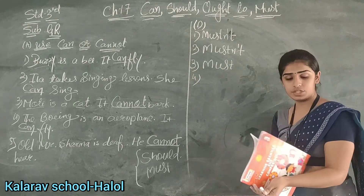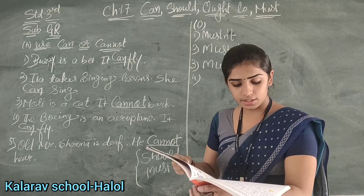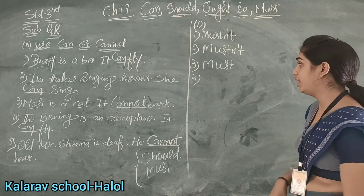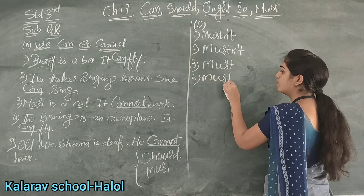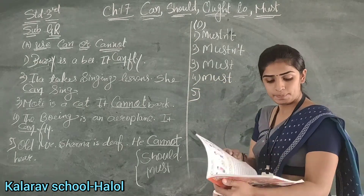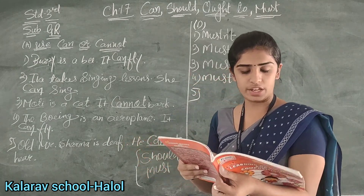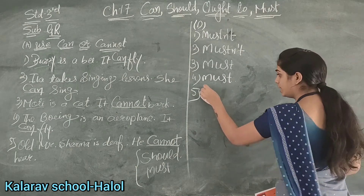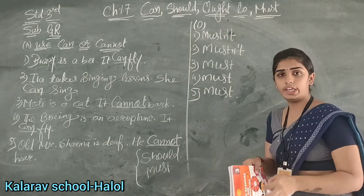Now see the next number. I am very hungry. I must eat something right away. So when we are hungry, we must eat at that time when we feel very hungry. Now fifth number: It is cold. You must wear your jacket. When it is cold, you must wear a jacket.